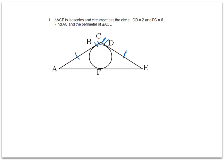That allows us to say that DE will be congruent to FE, and then at the same time on the other side, AB will be congruent to AF.